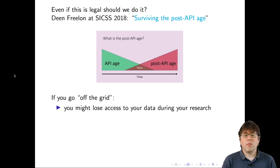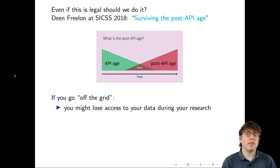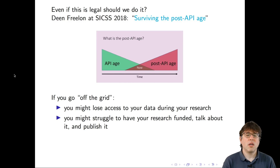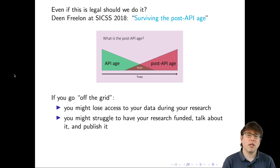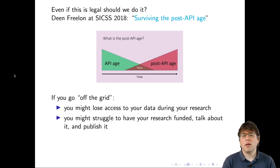If you go off the grid, you might lose access to your data during your research. If you start a months-long scraping project and the company figures out and blocks you, you'll be cut off from data access. You might also struggle to get your research funded — I've reviewed a grant where a funder was very concerned about off-the-grid data collection and ended up not funding the research. Even if you cross that barrier, you may face problems when presenting your research or when it comes up in the peer review process.